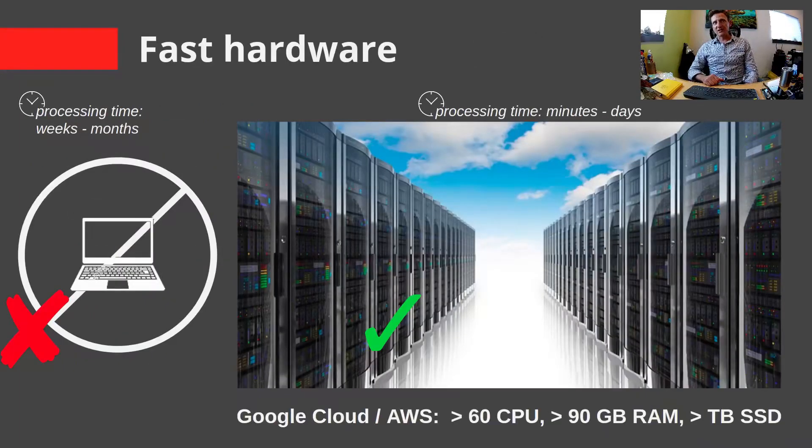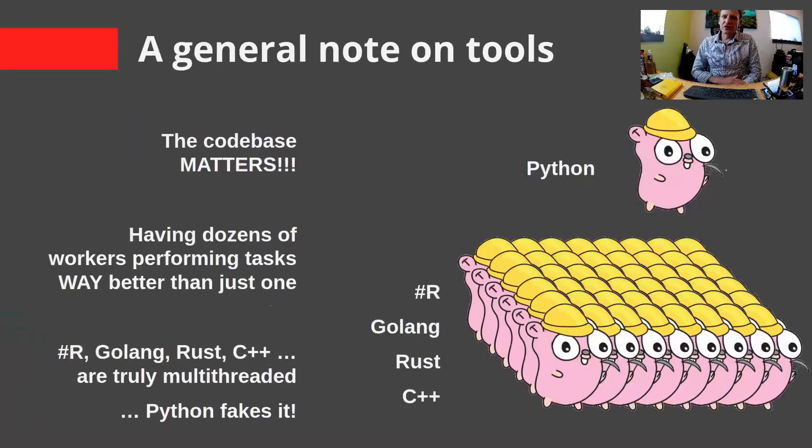This type of statistics or algorithms are not really suited for your laptop or your desktop hardware. You can try it and you can run it. But sometimes it'll work, especially if you have small data. But in the big data, we want processing time on minutes to days or hours, not weeks to months. So we leverage the power of the cloud. Google Cloud and Amazon Web Services are two examples of the more popular kinds where we're talking about virtual computers that have more than 60 CPUs, greater than 90 gigabytes of RAM, and terabytes of fast storage.